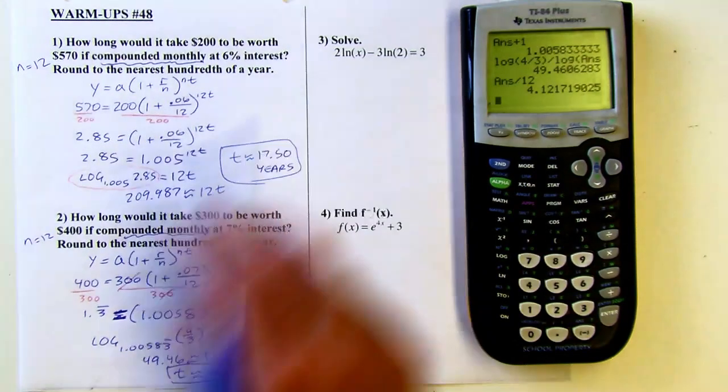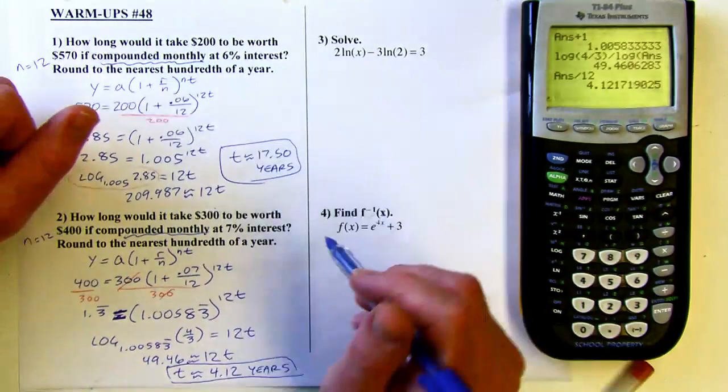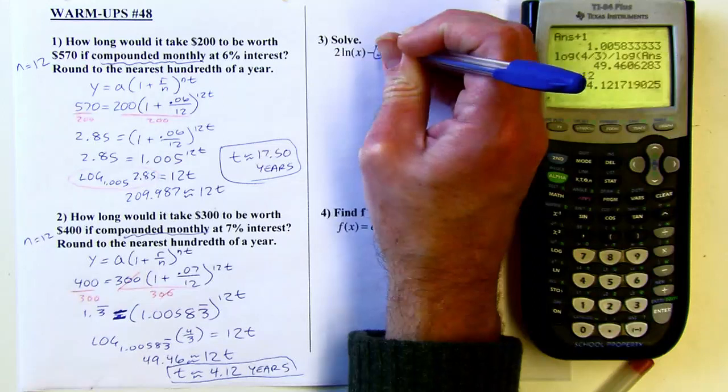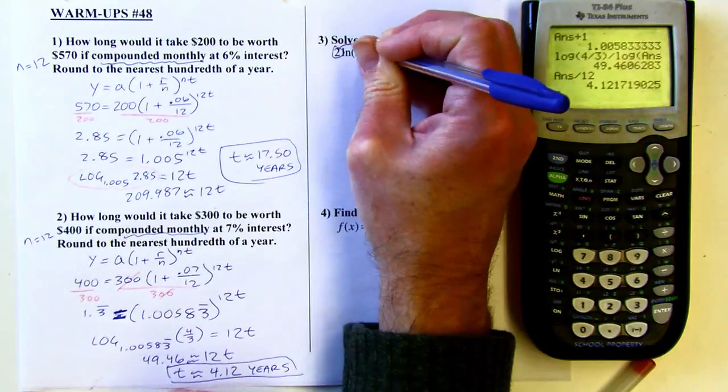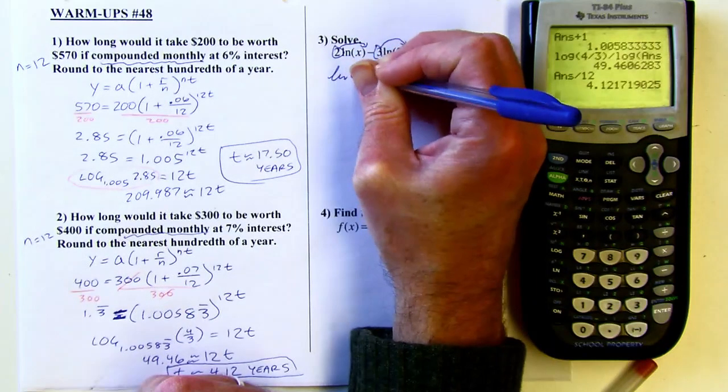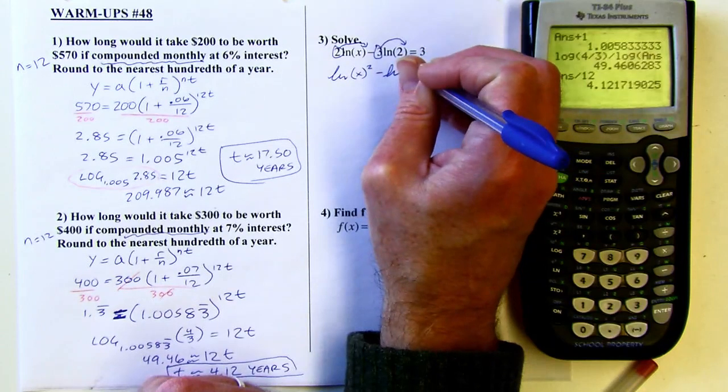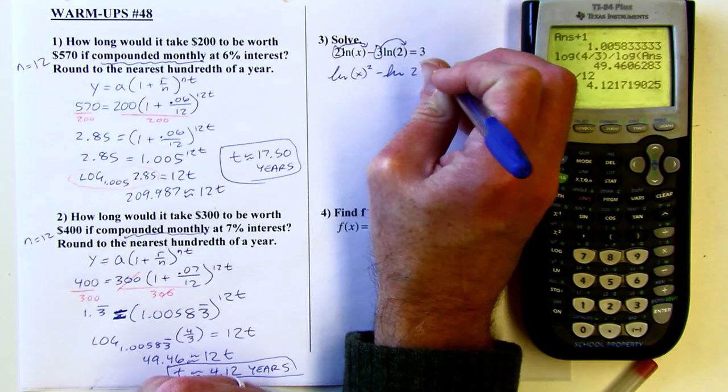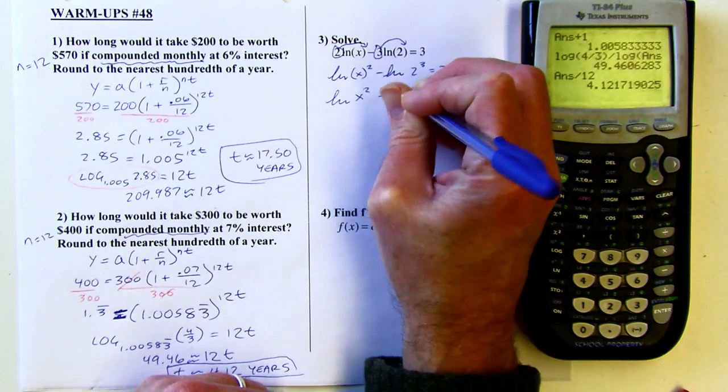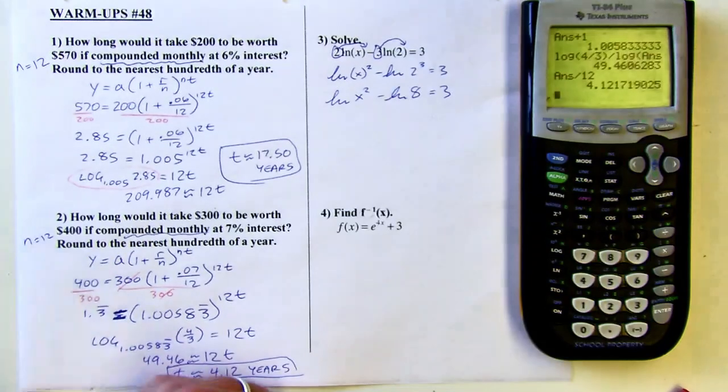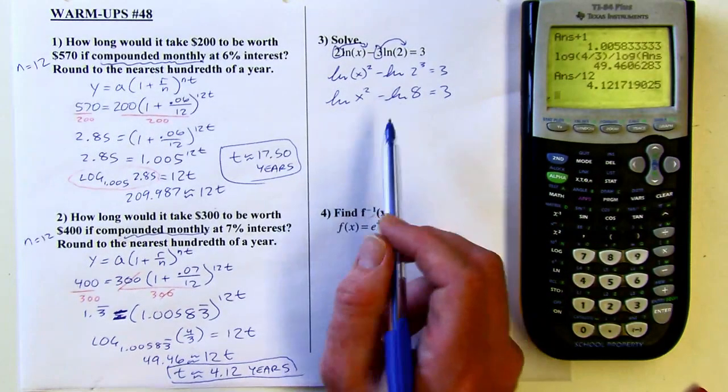All right. The next problem, we've got some natural logs here. This is two times the natural log of x. So since I've got two different logs, I want to combine them together. But before I do that, I have to use the power rule to get rid of that coefficient and get that coefficient out of the way. And I've got a coefficient here. So with both of these. So I'm going to rewrite the first one as log of x to the second. I'm sorry, natural log of x to the second and natural log of two to the third. And two to the third is eight. So I could simplify that a little bit further.